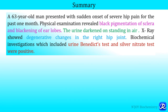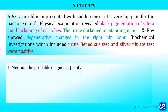Let's summarize by discussing the answers to the case study. The probable diagnosis is alkaptonuria, justified because the patient showed black pigmentation of sclera and blackening of ear lobes, urine darkened on standing in air, X-ray showed degenerative changes in the right hip joint indicating arthritis, and Benedict test and silver nitrate test were positive.